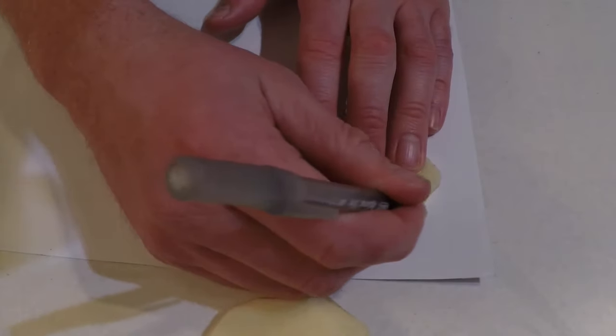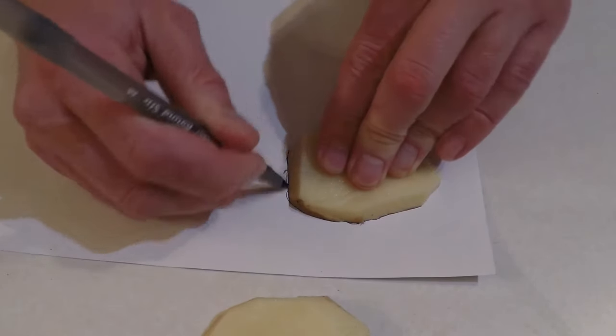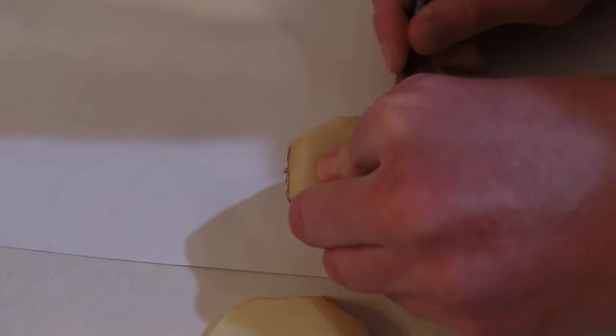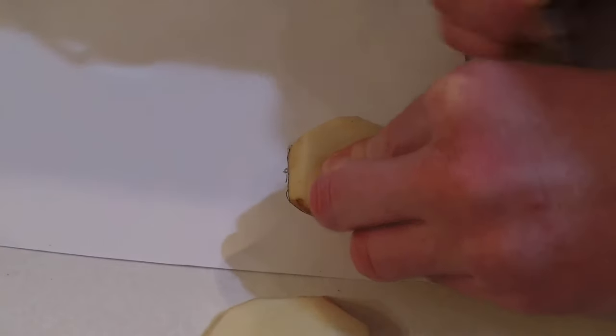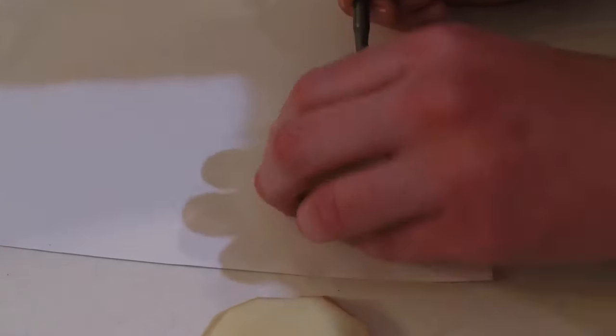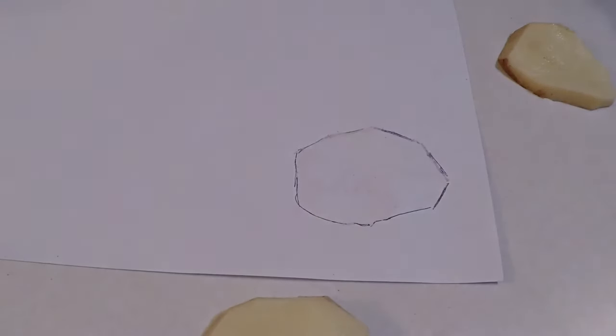Next what I'm going to do is trace each one of these layers of the potato using a pen. While tracing these I made sure to hold the potato pieces down firm so that it did not slip or slide or make any mistakes while I was tracing. Some of the lines I forgot to draw and some of them I needed to redraw because the pen wasn't quite working.